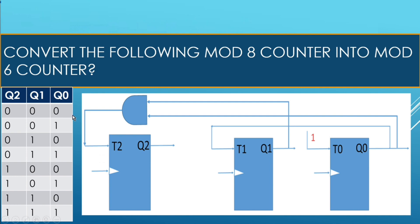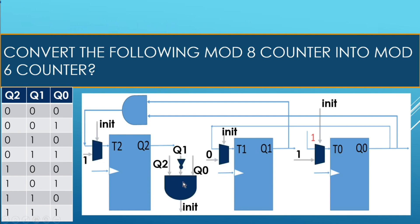To do this, I have added extra circuitry drawn in blue and gray ink. This is an AND gate applying q2, q1-bar, and q0, generating a signal called 'in'. When q2, q1, and q0 are 1, 0, and 1 respectively, 'in' will go high. In all other states — 000, 001, 010, 011, and 100 — 'in' will remain 0.